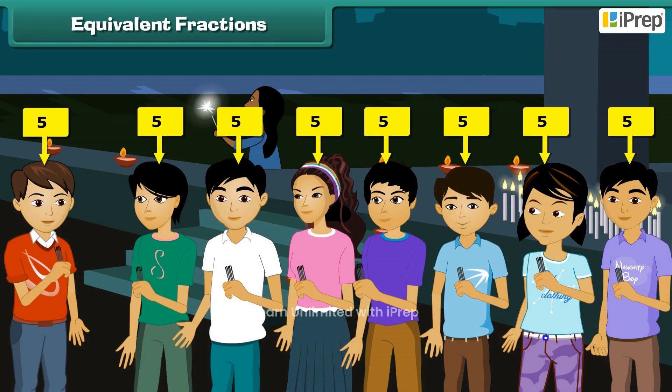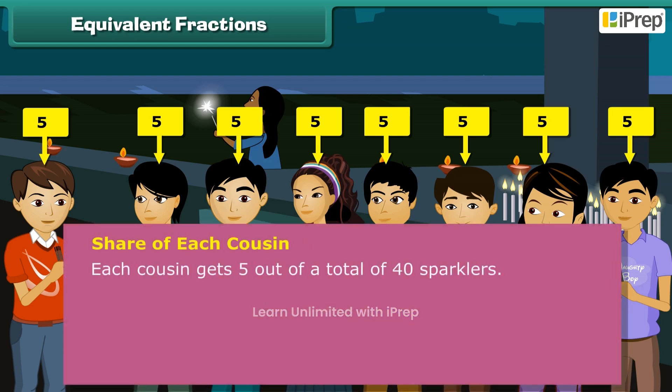Now, Rishabh divides the sparklers among the eight cousins, including himself, in less than a minute. Let us see how. Each cousin gets 5 out of a total of 40 sparklers. 5 by 40 is equal to 1 by 8. Thus, the share of each cousin in the whole is 1 by 8.